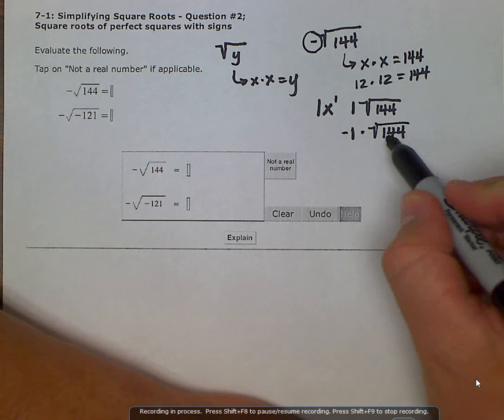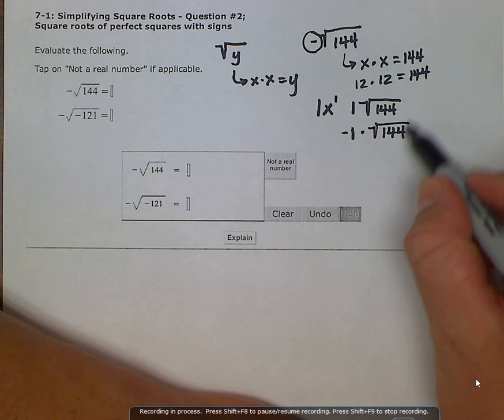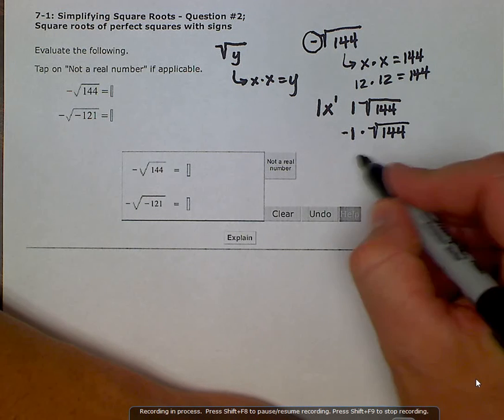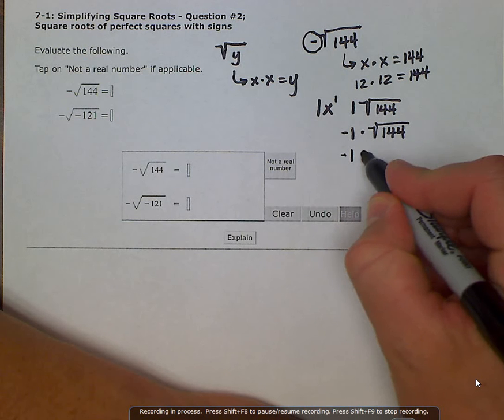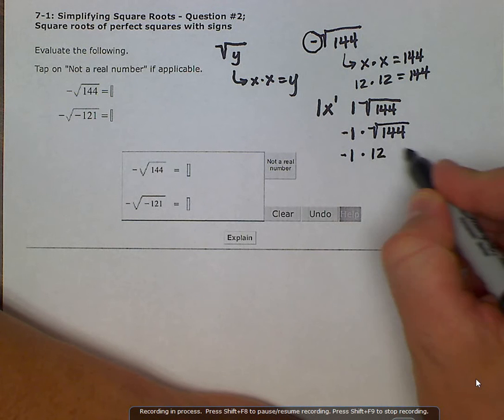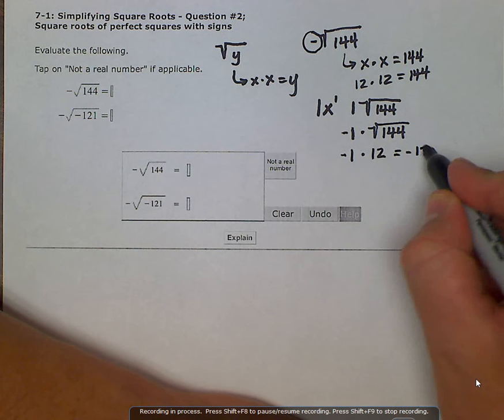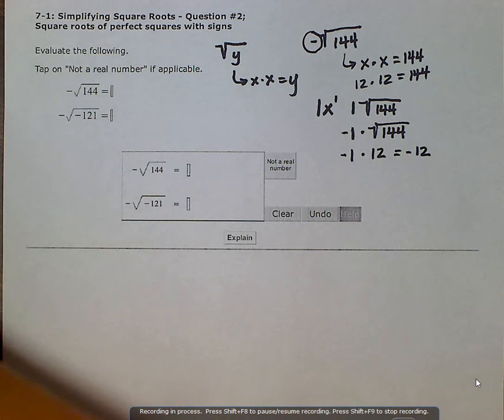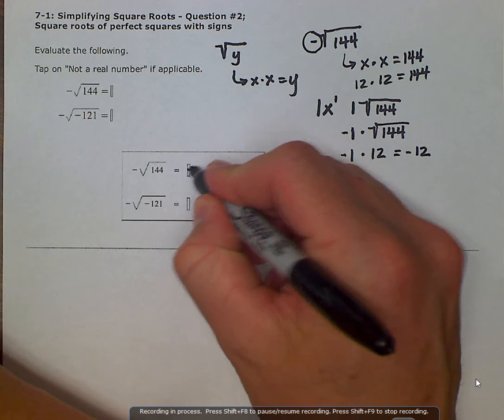We know that the square root of 144 up here is 12. So now we have negative 1 times 12 which we can evaluate as negative 12, which is for sure a real number. So we would put in here negative 12 as our answer.